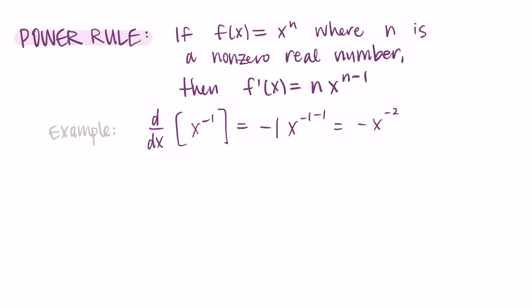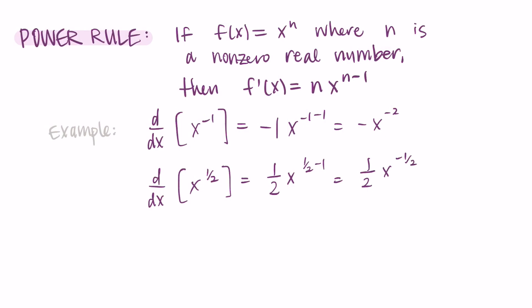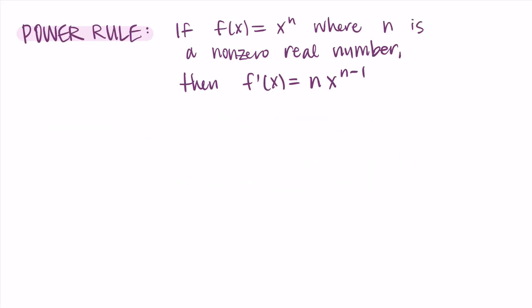The last power rule example: the derivative of x to the one half. The one half comes down in front, then we decrease the power by one — one half minus one — leaving us with one half times x to the negative one half. Anytime we have x to some power, we just follow this same process.